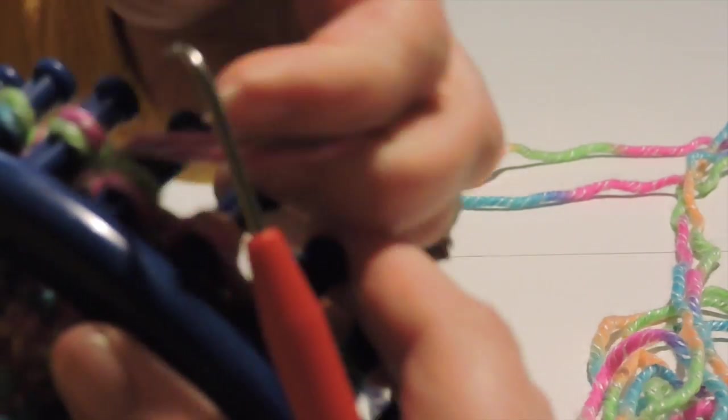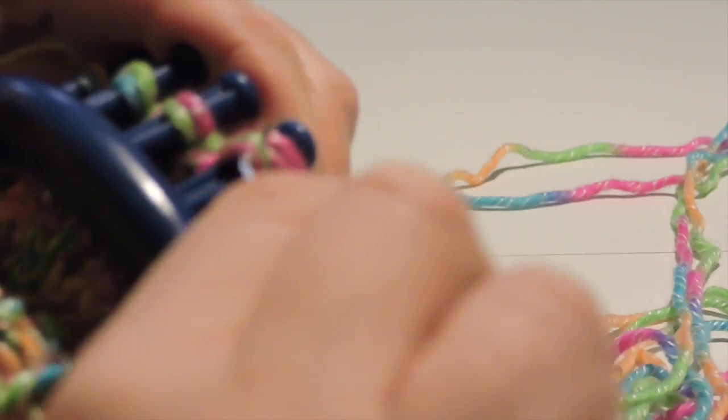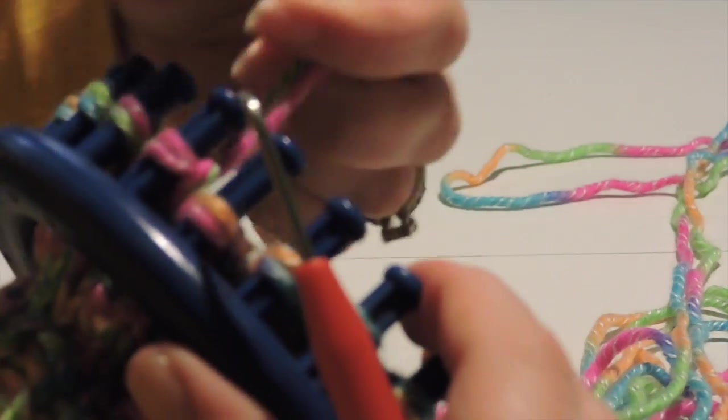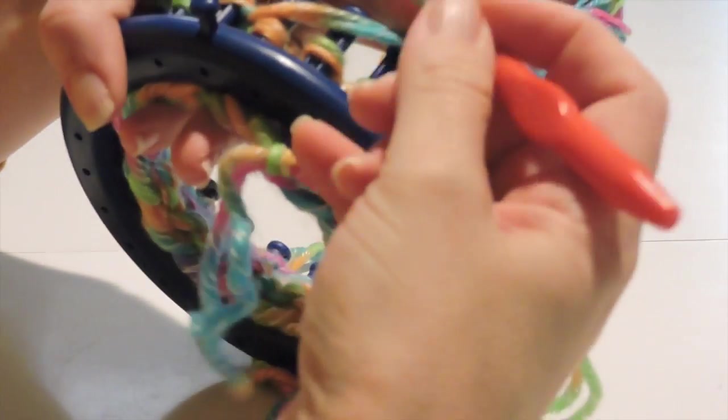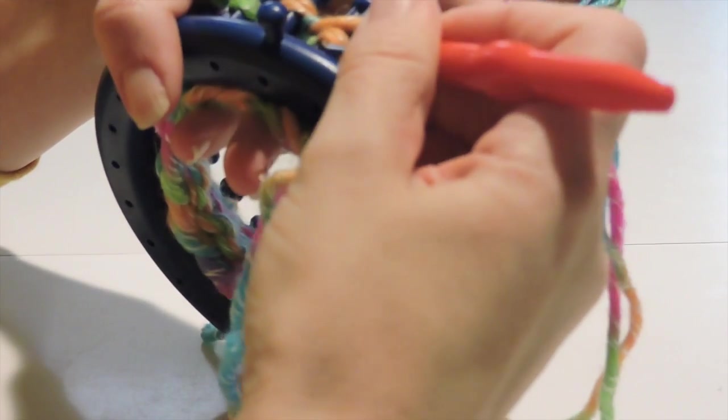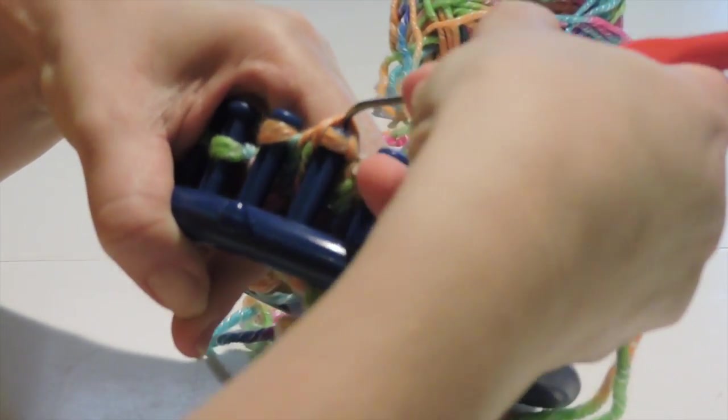So after you make the cuff of the hand, you'll start the heel of the hand. So you can follow my directions below or you can continue doing the E-wrap method until you get to the thumb in this video. If you have any questions, feel free to leave me a comment below and I would love to help you.